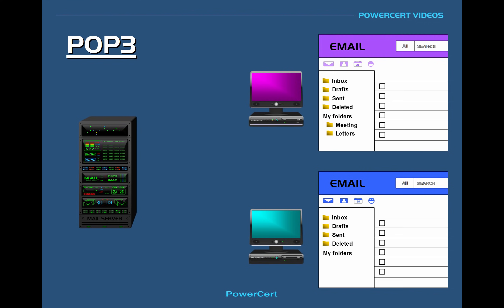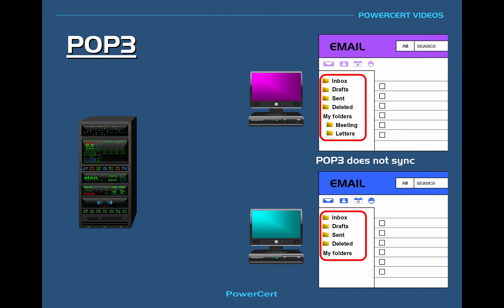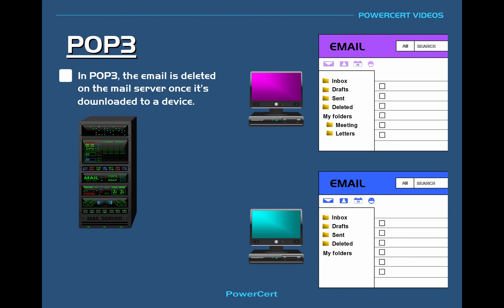For example, here we have two computers configured to retrieve the same email account. The folder structures are different on these two computers because POP3 does not synchronize the folders. By default when you're using POP3, the email will be deleted on the mail server once it's downloaded to a device, so no copy of the email is kept on the server.